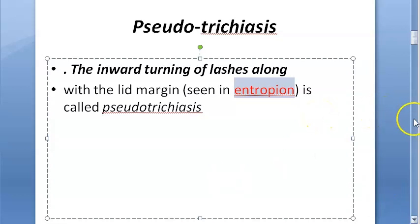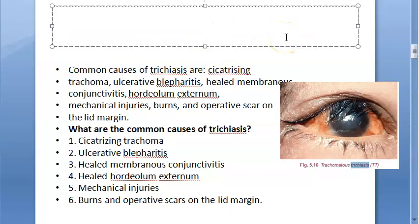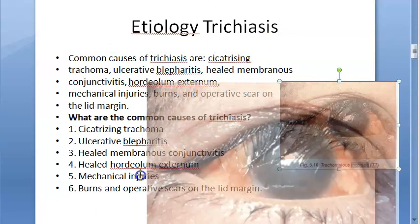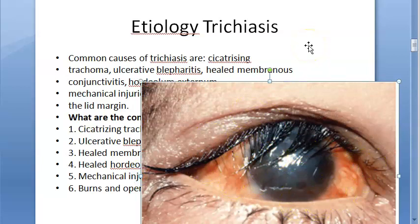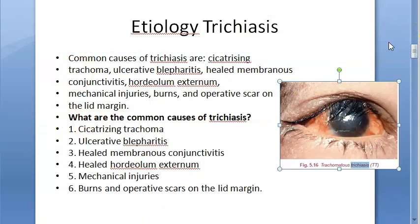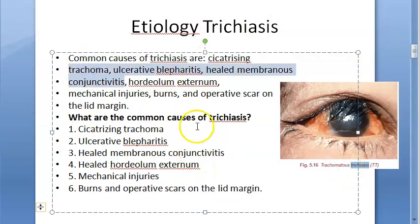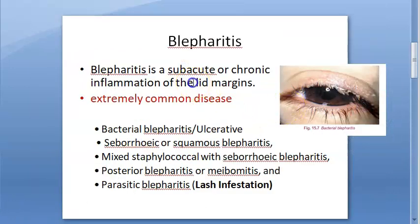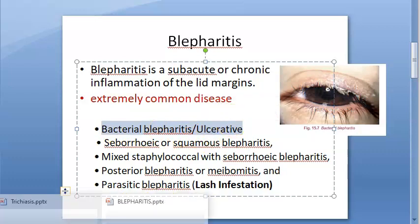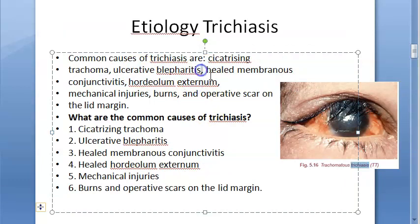Now let's look at the etiology of trichiasis. The causes include cicatrizing trachoma — trachoma is an infective cause of blindness and we should be very careful with this. Another cause is ulcerative blepharitis, which is inflammation of the eyelid margin. It can be subacute or chronic and is also called bacterial blepharitis.